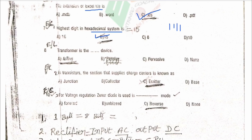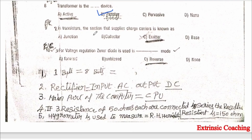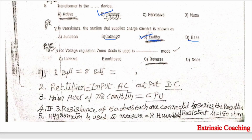Then: is a transformer an active device? No, a transformer is a passive device. Active devices are transistors, voltage sources, current sources, and op-amps (operational amplifiers). A transformer is a passive device which contains R, L, G, C components. Next: in a transistor, the section that supplies the charge carrier is known as the emitter — the emitter emits electrons, the collector collects them, and the base is in between.